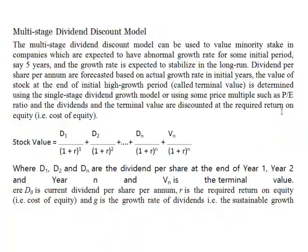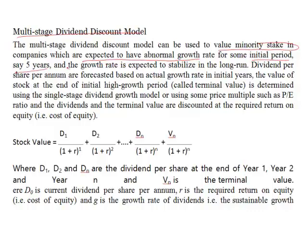The multi-stage dividend discount model can be used to value minority stakes in companies expected to have abnormal growth for some initial period, say five years, after which the growth rate is expected to stabilize in the long run. Dividend per share per annum are forecasted based on actual growth rates in the initial years, and the value of the stock at the end of the initial growth period is determined using the single-stage dividend growth model or price multiples such as the price-to-earnings ratio.